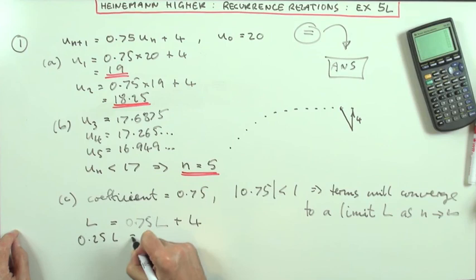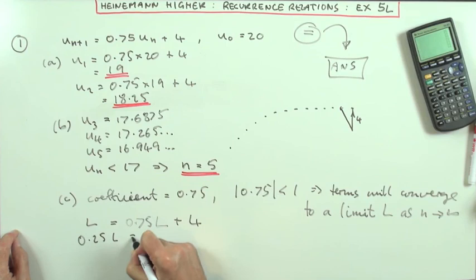Swap sides. 0.25 of L is 4. Divide out 4 divided by 0.25, and you know that's a quarter, so a quarter into that's going to be 16. So the limit's going to be 16. That's question 1.